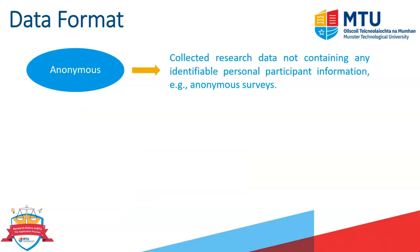So, anonymous — it kind of speaks for itself. It's where the data has been collected such that it doesn't contain any personal participant information. A classic example would be an anonymous survey, where you're not getting any identifiable information on your participants. That obviously means the control afterwards with regard to the processing of the data will be a lot more manageable.